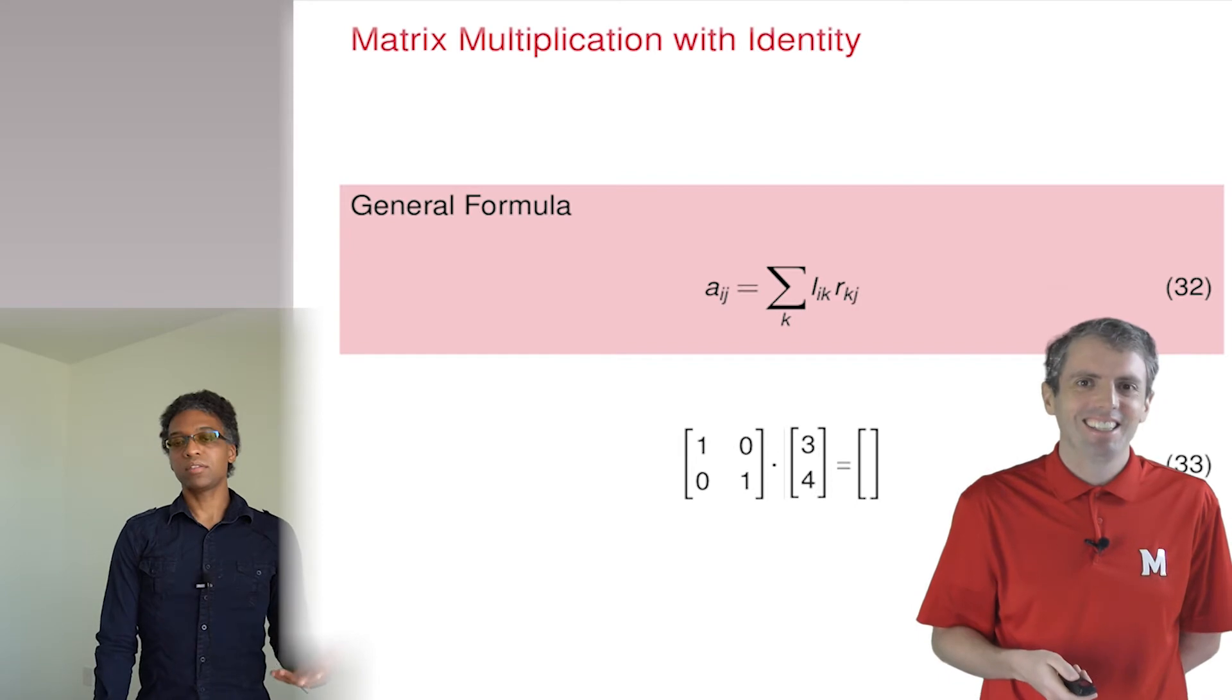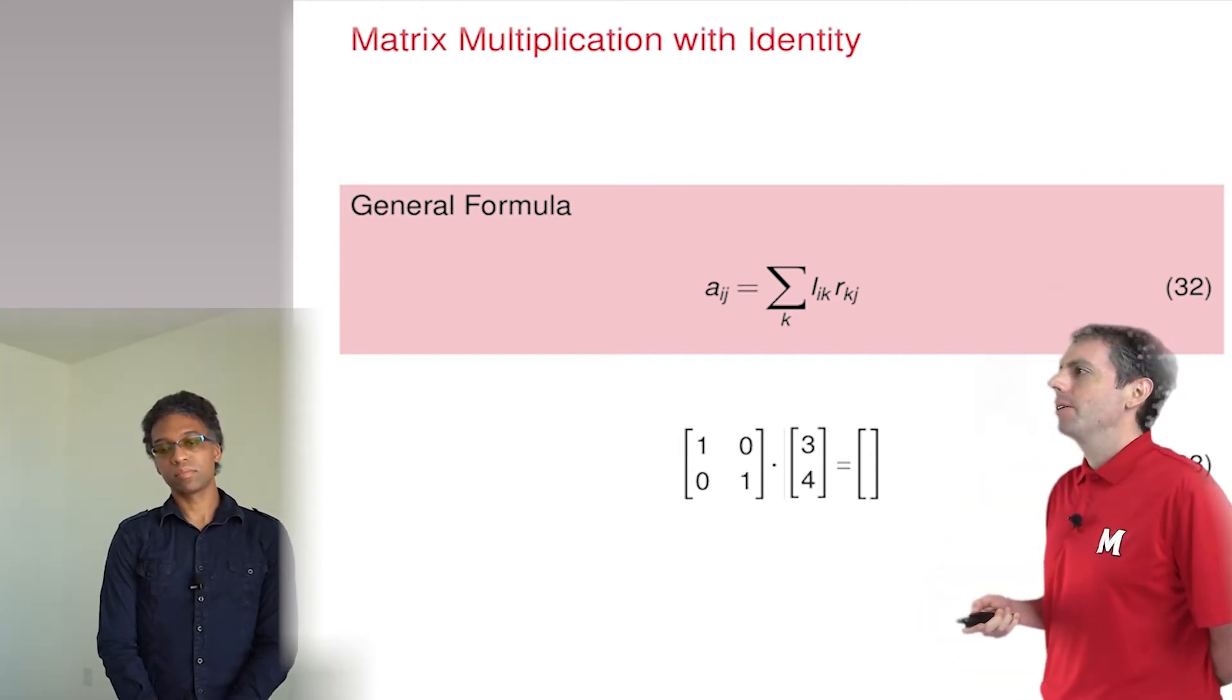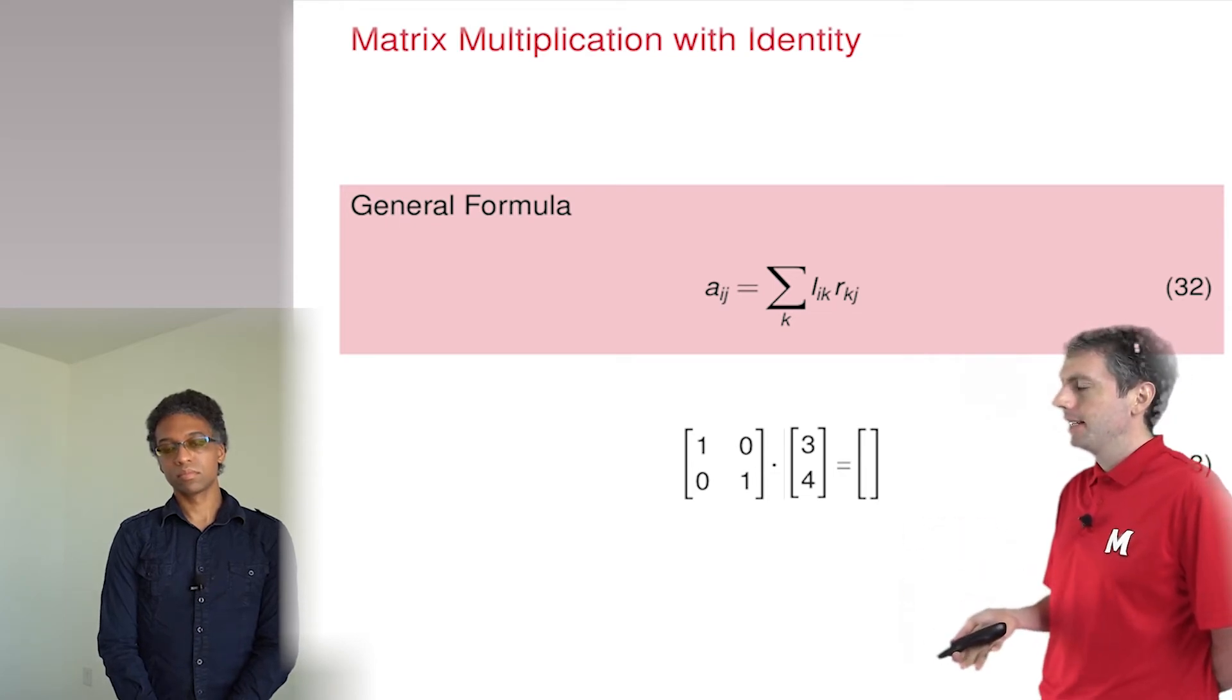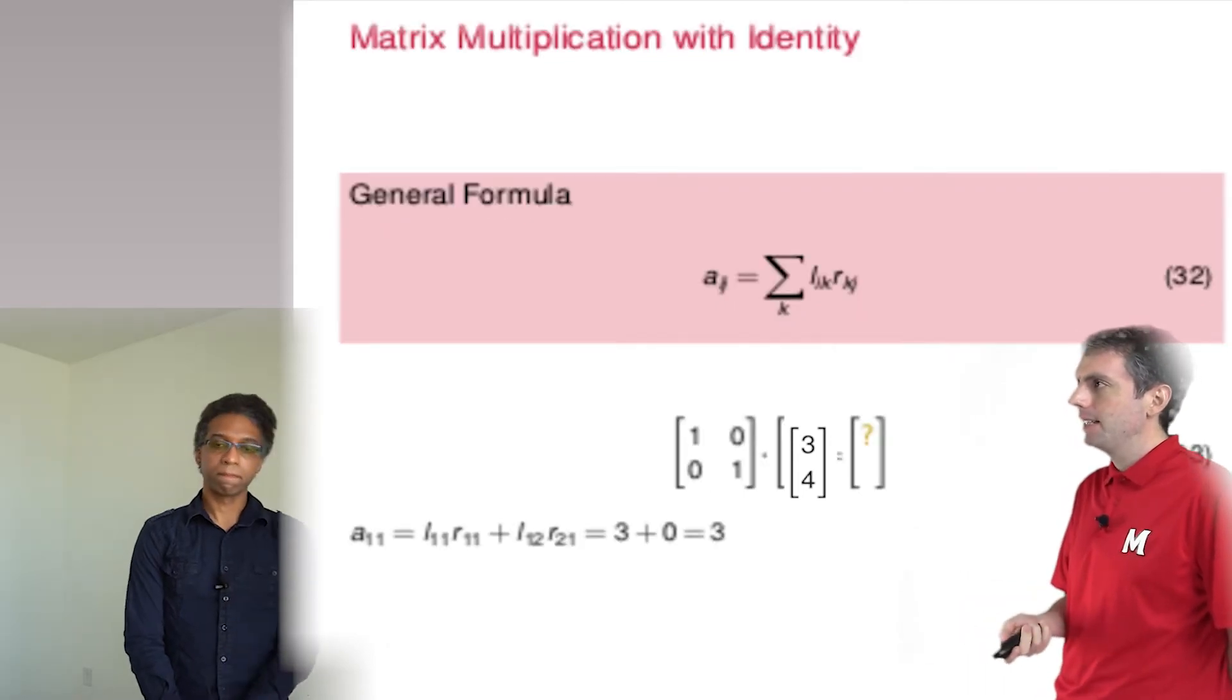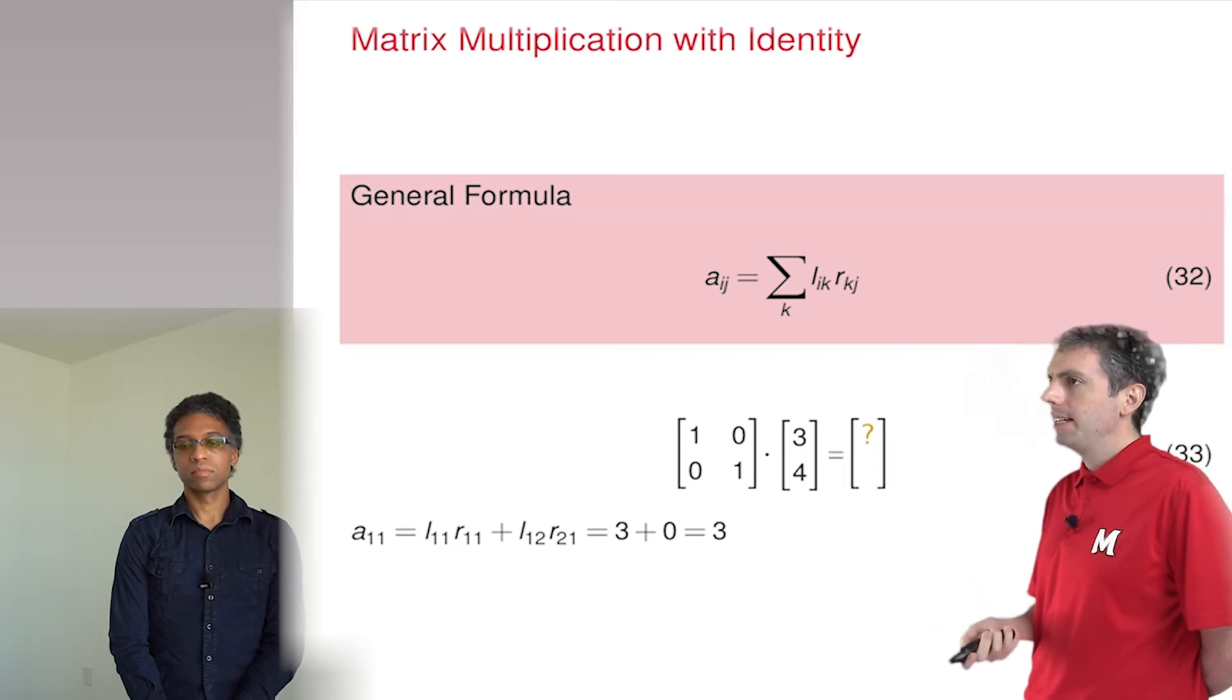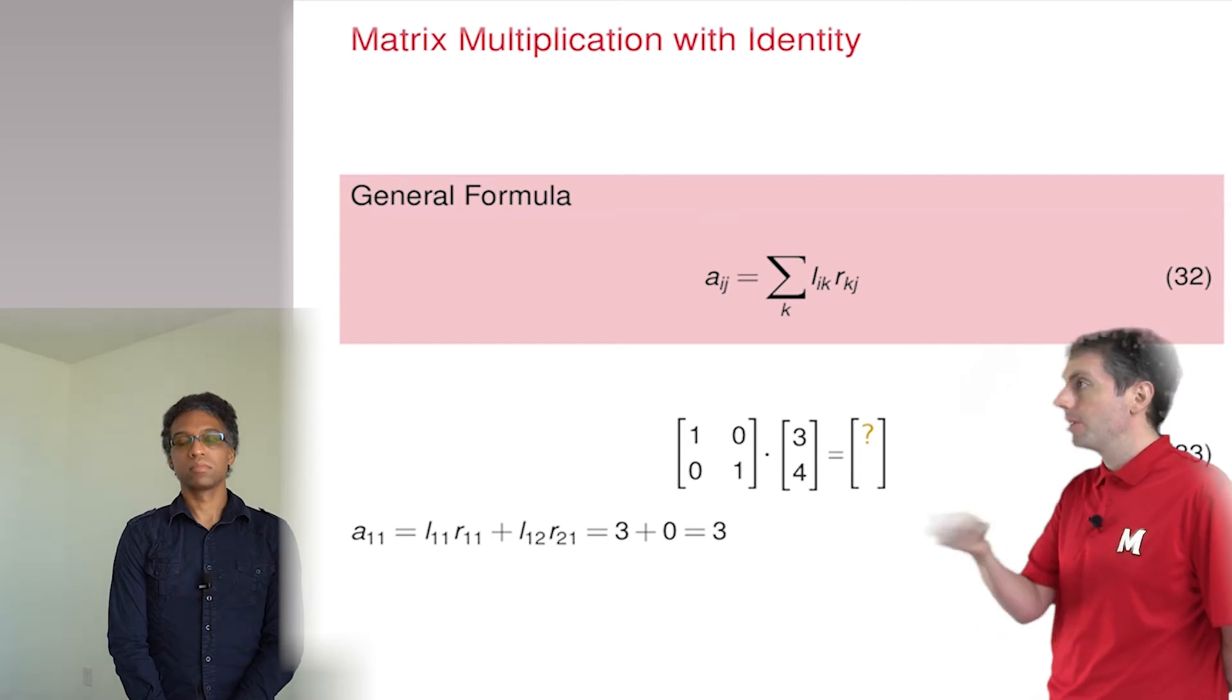What's the product of the two-by-two identity matrix and the vector? Okay, so the result will be a two-by-one matrix. That means there are only two cells when you need to fill in. For the top cell, we add one times three plus zero times four, which is three.